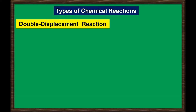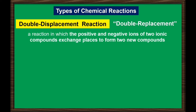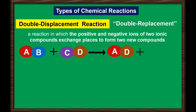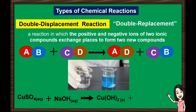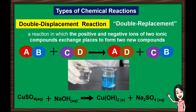Next is double displacement reaction, also known as double replacement reaction. In this reaction, the positive and negative ions of two ionic compounds exchange places to form two new compounds. This reaction generally occurs between substances in aqueous solution. In order for a reaction to occur, one of the products is usually a solid precipitate, a gas, or a molecular compound such as water. For example, aqueous copper sulfate reacts with aqueous sodium hydroxide to produce insoluble copper-2-hydroxide and sodium sulfate solution.